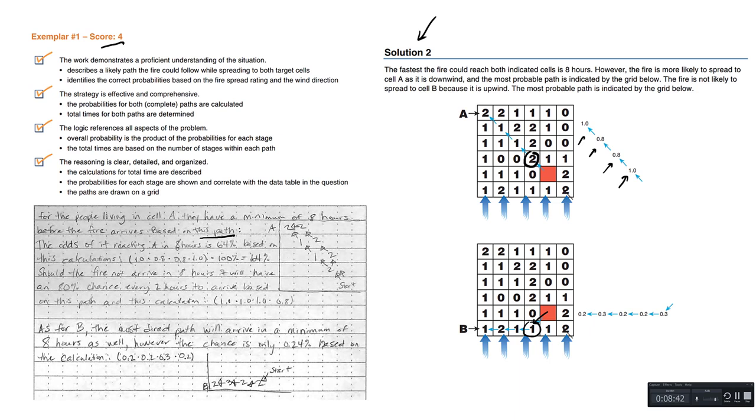The odds of it reaching A in eight hours is 64% based on this calculation. So they're multiplying all the probabilities. And should the fire not arrive in eight hours, it will have an 80% chance every two hours to arrive based on this path and this calculation.